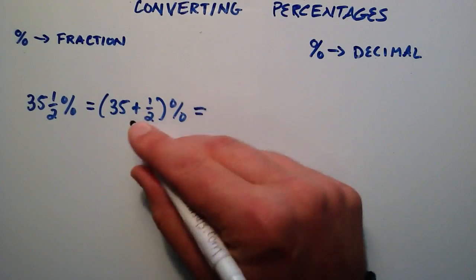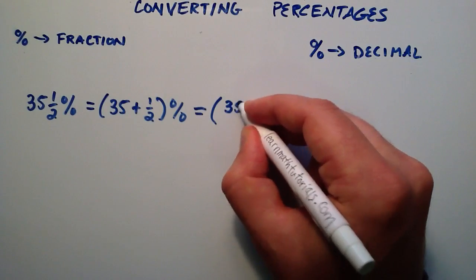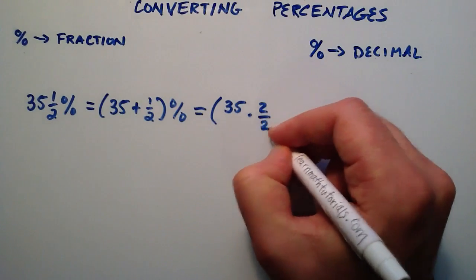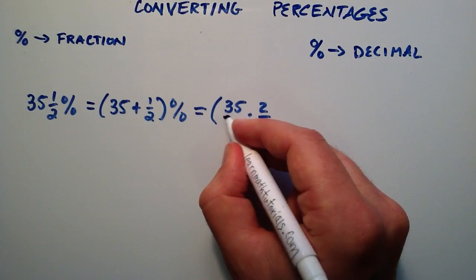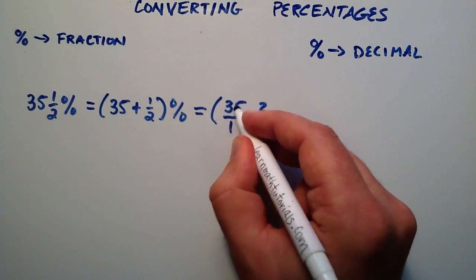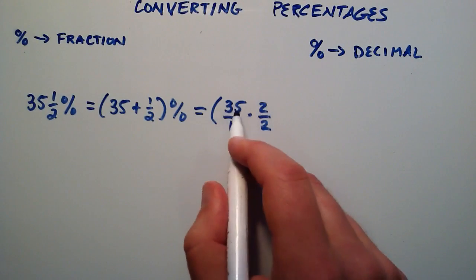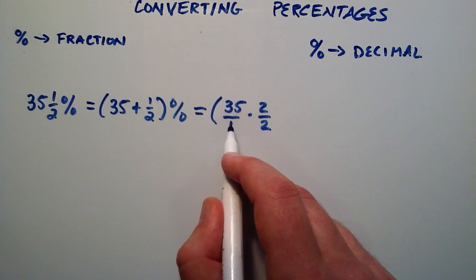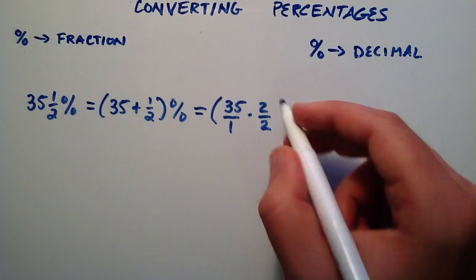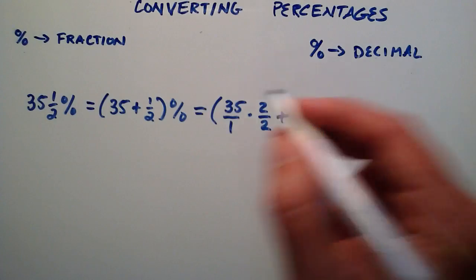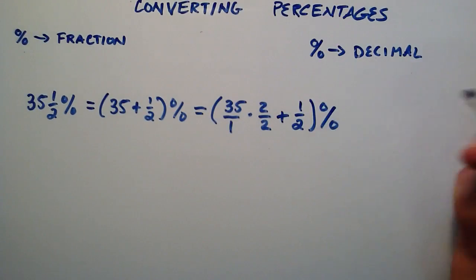So we're going to get the same common denominator here, and the way we're going to do that is we're going to multiply the number 35 by the number 1. And we're choosing 2 divided by 2, that equals 1, so we're going to multiply it by that. And then we're going to divide it by 1 because that doesn't change anything. So what I've done here is I'm still left with the number 35. 35 divided by 1 is still 35, and 35 times 1 equals 35. And then we're adding that to the 1 half, and taking the percent of all that.